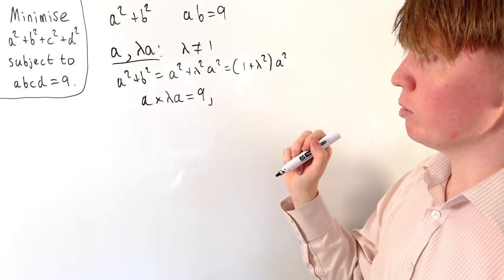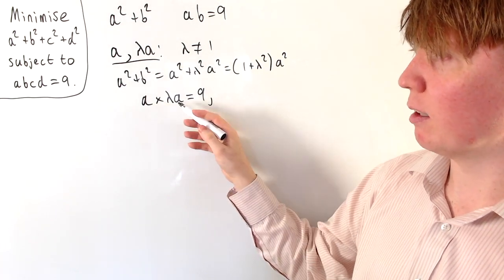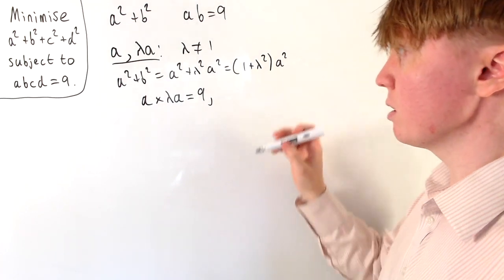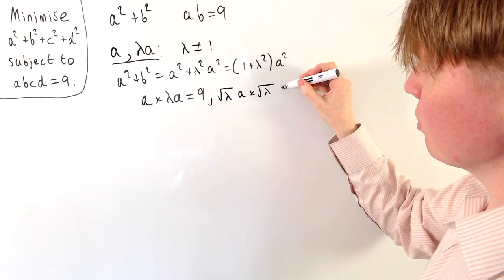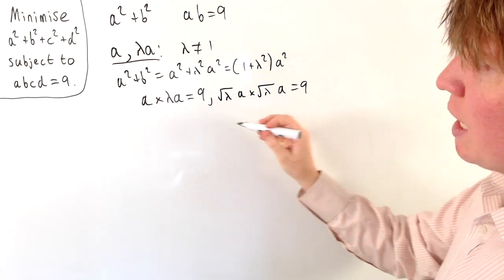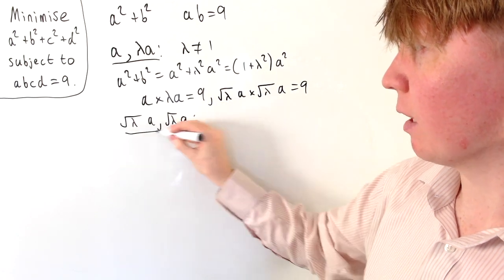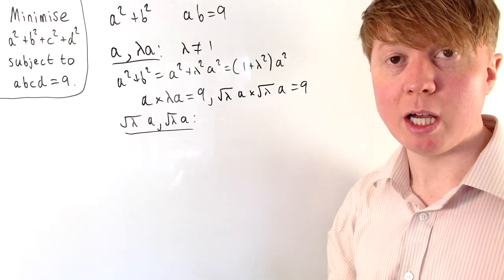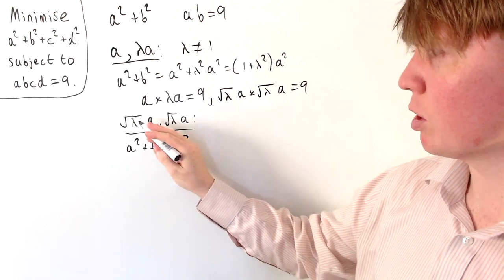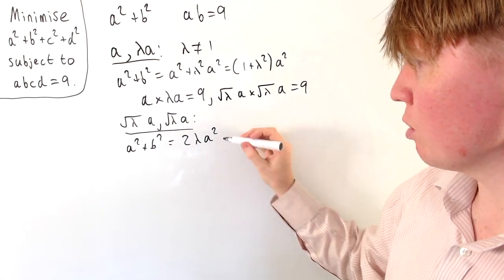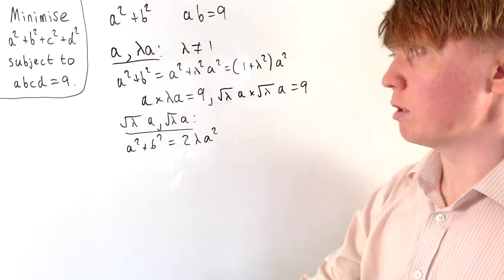To distribute lambda evenly between the two numbers so the product stays the same, we take the square root of lambda. Since the product must be positive, lambda is positive, so there are no issues taking the square root. We now have root lambda times a and root lambda times a — the product is still 9, and a squared plus b squared becomes 2 lambda a squared.